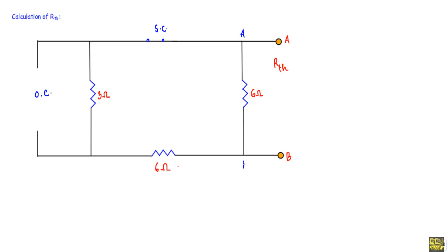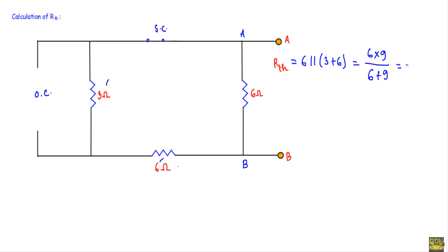With respect to the A and B terminals, this 3 ohm and the 6 ohm will be connected in series, and their series combination will be in parallel with this 6 ohm. Therefore our Rth will be equal to 6 ohm in parallel with the series of 3 and 6 ohm, so: (6 × 9) / (6 + 9) which is equal to 3.6 ohm.